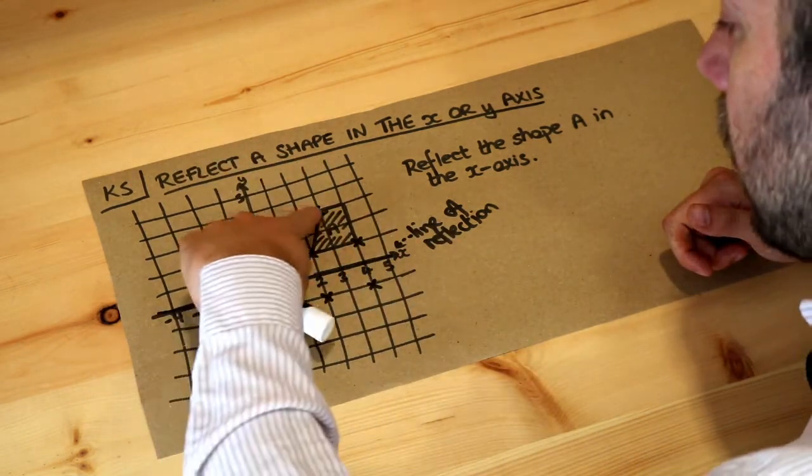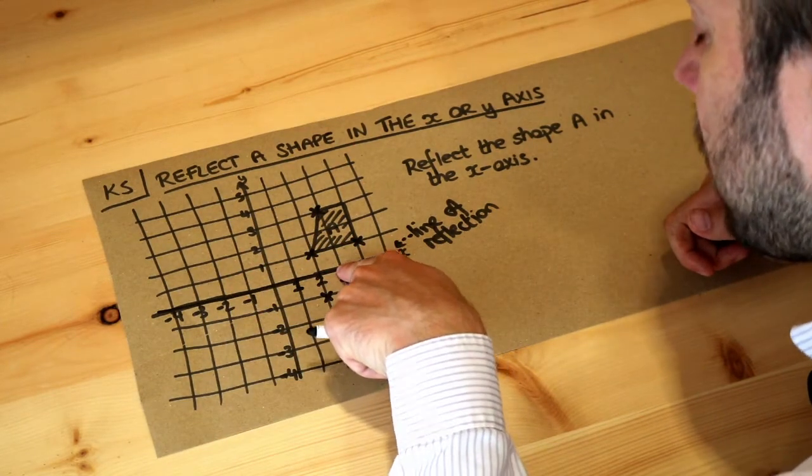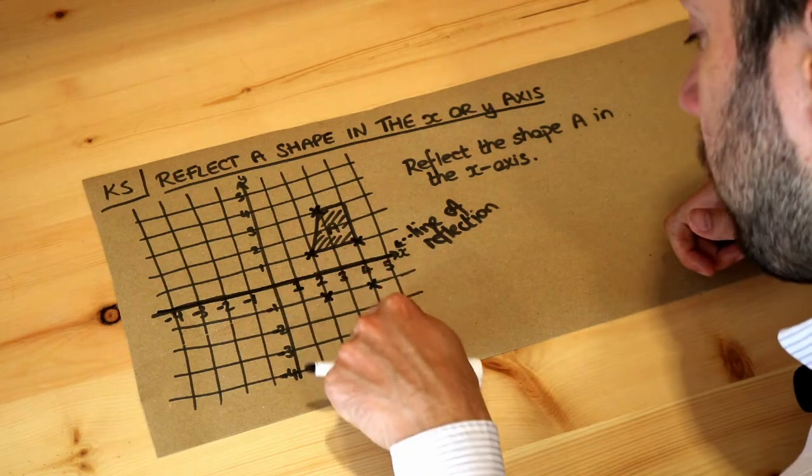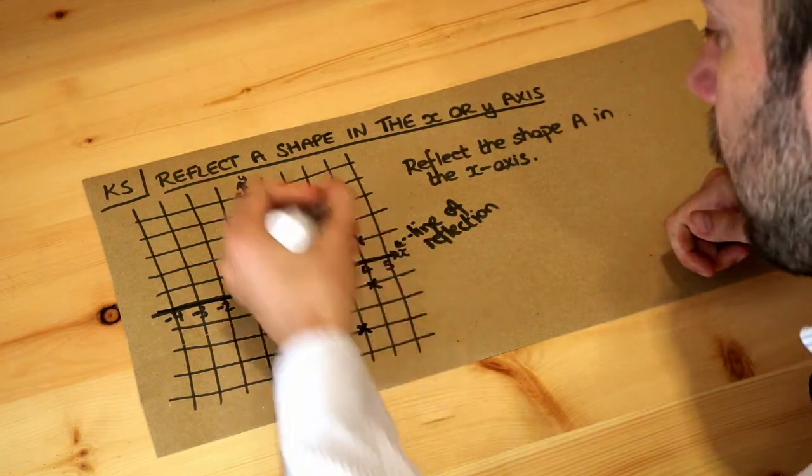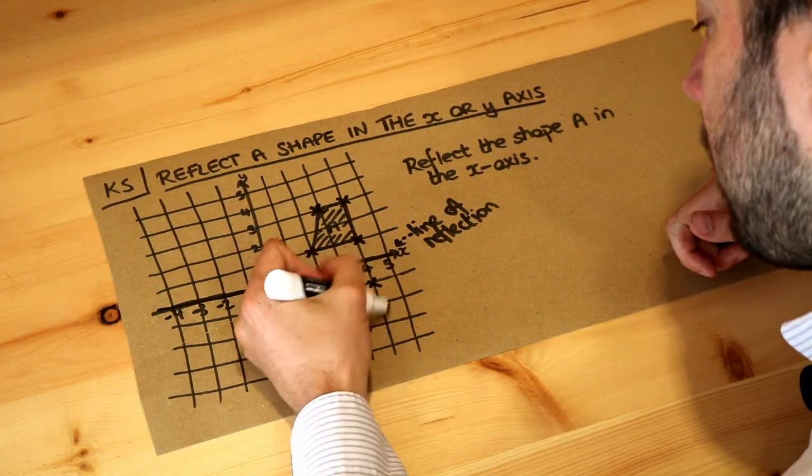Next one. If we go directly towards the line of reflection one two three squares. We're now on the line of reflection the X axis. One two three again we get this. And then finally this point one two three one two three. So we're here.